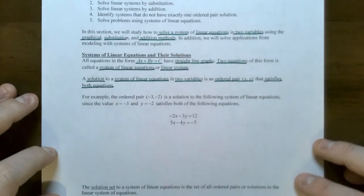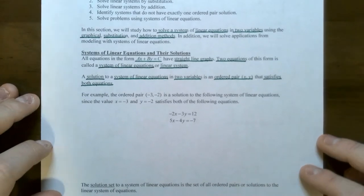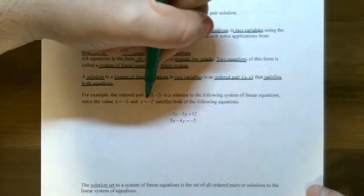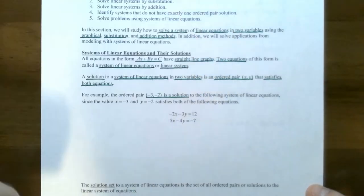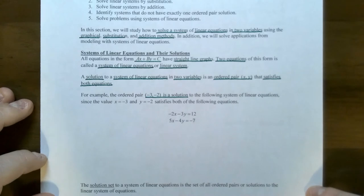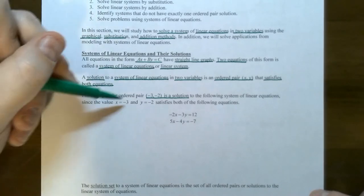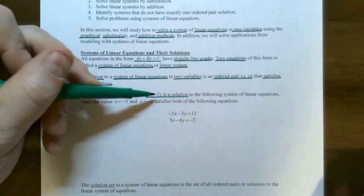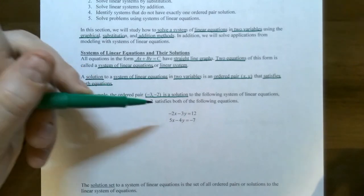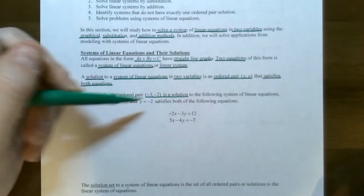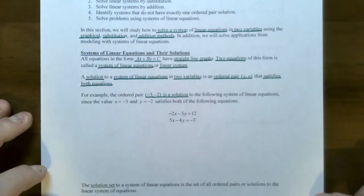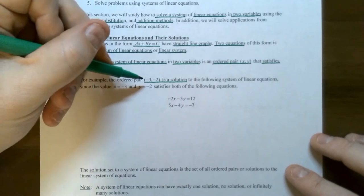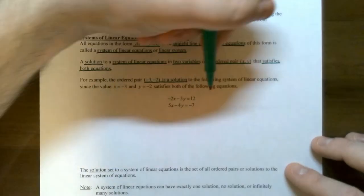Let's try an example to see what this means. The ordered pair negative three comma negative two is claimed to be a solution to a given system of equations, where x equals negative three comes from the x coordinate and y equals negative two comes from the y coordinate. Let's check to see if this is actually a solution.